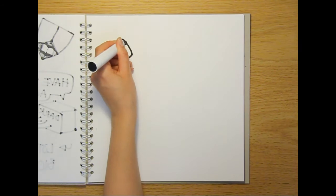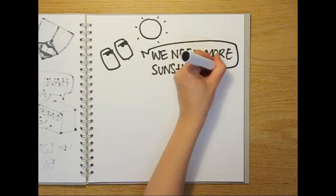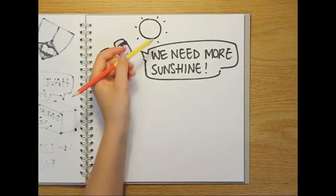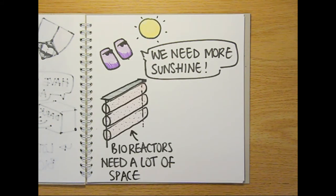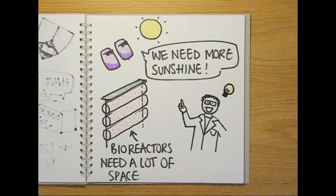The big challenge that they face is that purple bacteria require a lot of sunlight in order to convert organic acids into hydrogen. This means that the bioreactors take up a lot of space. So the Birmingham team has come up with a new neat trick that could make the bioreactors twice as effective.